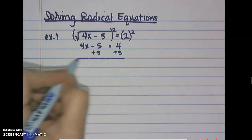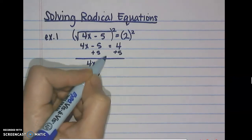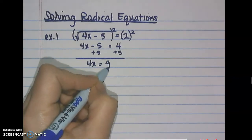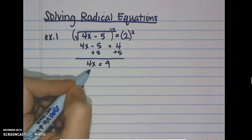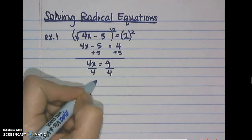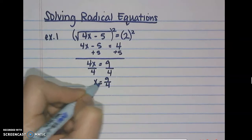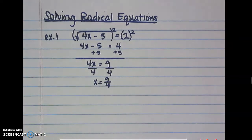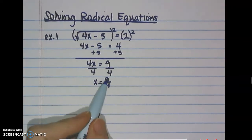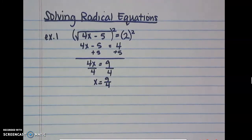Now we just have an Algebra 1 equation to solve. We add 5 to get 4x equals 9, then divide by 4 on both sides to get x equals 9/4. We leave the answer as a fraction, then check by plugging it back into the original equation.